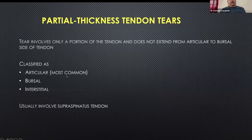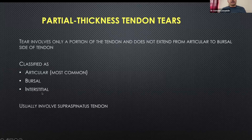For partial thickness tears, articular surface tear is the most common. Bursal surface tears are less common, and interstitial tears are usually asymptomatic and incidentally detected.